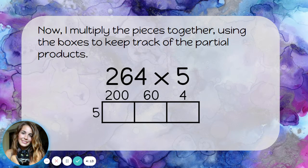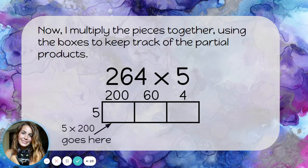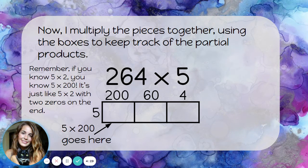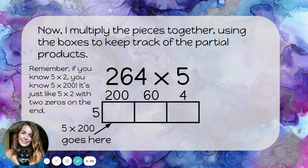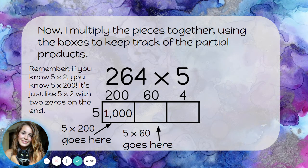Just like with a 2-digit number, I'm going to multiply the pieces together — except this time I have 3 pieces to multiply. In the first box, I'm multiplying 5 times 200. If you know 5 times 2 is 10, then 5 times 200 is 1,000 — just add two zeros. In the middle box, I multiply 5 times 60. 5 times 6 is 30, so 5 times 60 is 300.